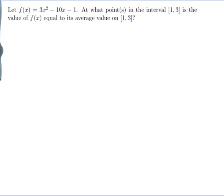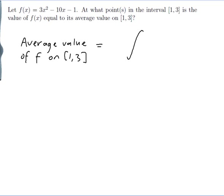Let's write down what the average value on [1, 3] means. The average value of f on [1, 3] is the integral from 1 to 3 of f dx, divided by the width of the interval, so 3 minus 1.